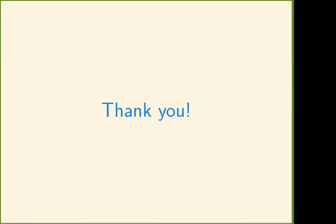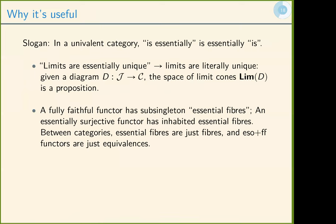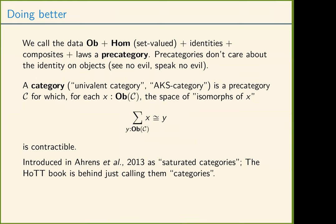I wanted to answer the question about how this compares to AgdaCategories. They can't use univalence because they're working in a system independent of univalence — they don't assume univalence, but they don't assume K either. So they are confined to the 'pretend you don't see the identity of objects' approach. The difference is that in AgdaCategories, since they also don't have quotients, they work with setoids for the morphisms. If you wanted to, you could have univalent categories with setoids for morphisms, but it's easier to just take a quotient, so the setoid goes away.